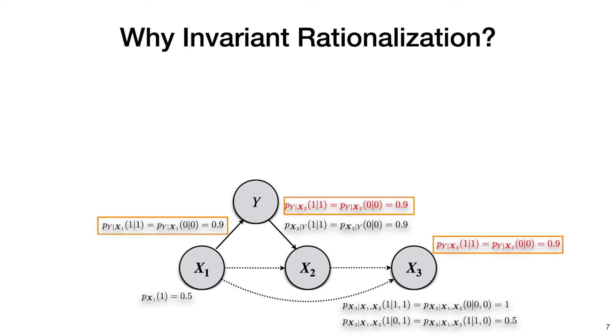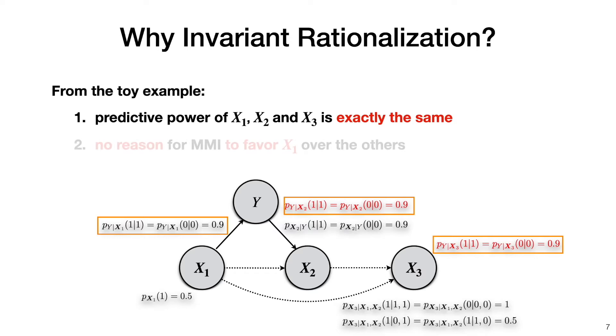In short, in this example, the predicted power of x1, x2, and x3 is exactly the same. So there is no reason for MMI to favor x1 over the others.